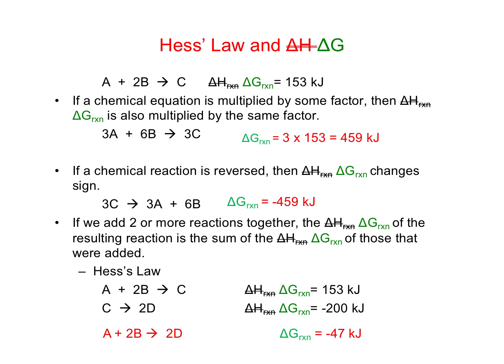The free energies of related reactions are related. There are a couple things we can do to reactions where the delta G's are going to be affected. In the first example, if I multiply the first reaction by 3 to get a new reaction, all I have to do is multiply the delta G by the same constant. So if the delta G for the original reaction was 153 kilojoules, I multiply the delta G by 3. If I reverse a reaction — swap the reactants and the products — the way we change the delta G is just change the sign. So if the original delta G was positive 459 kilojoules, in the new reaction the delta G is negative 459 kilojoules.